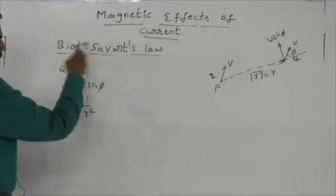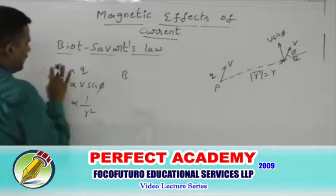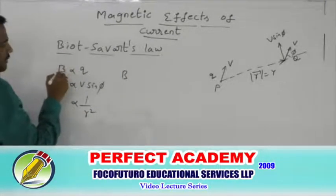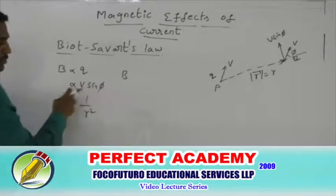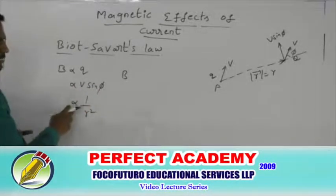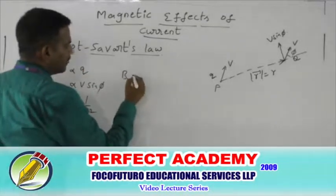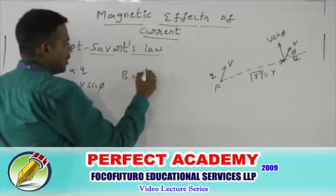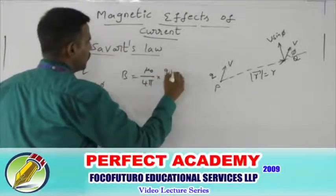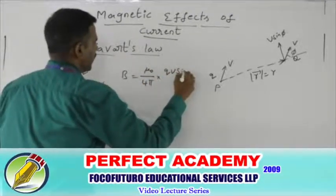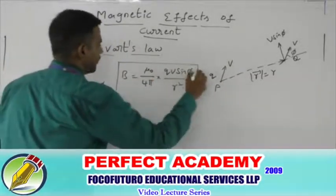By combining all these proportionalities, we can frame one relation: the magnetic field intensity B equals μ₀ by 4π times Q V sin φ divided by R square. This is the Biot-Savart Law in its scalar or magnitude form.